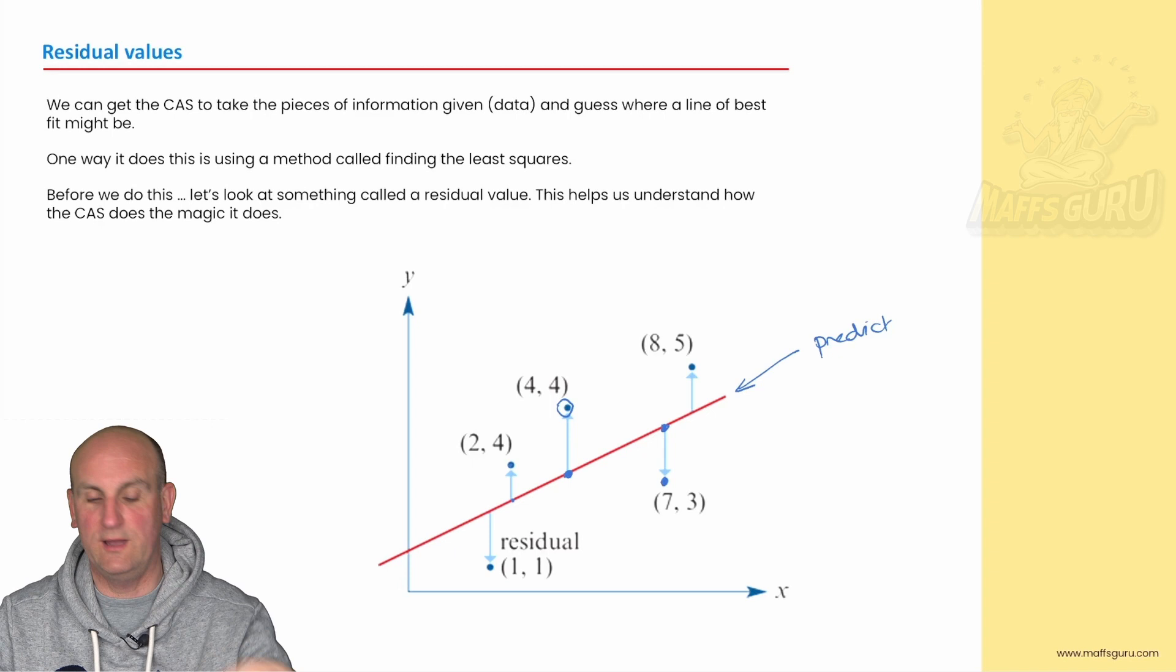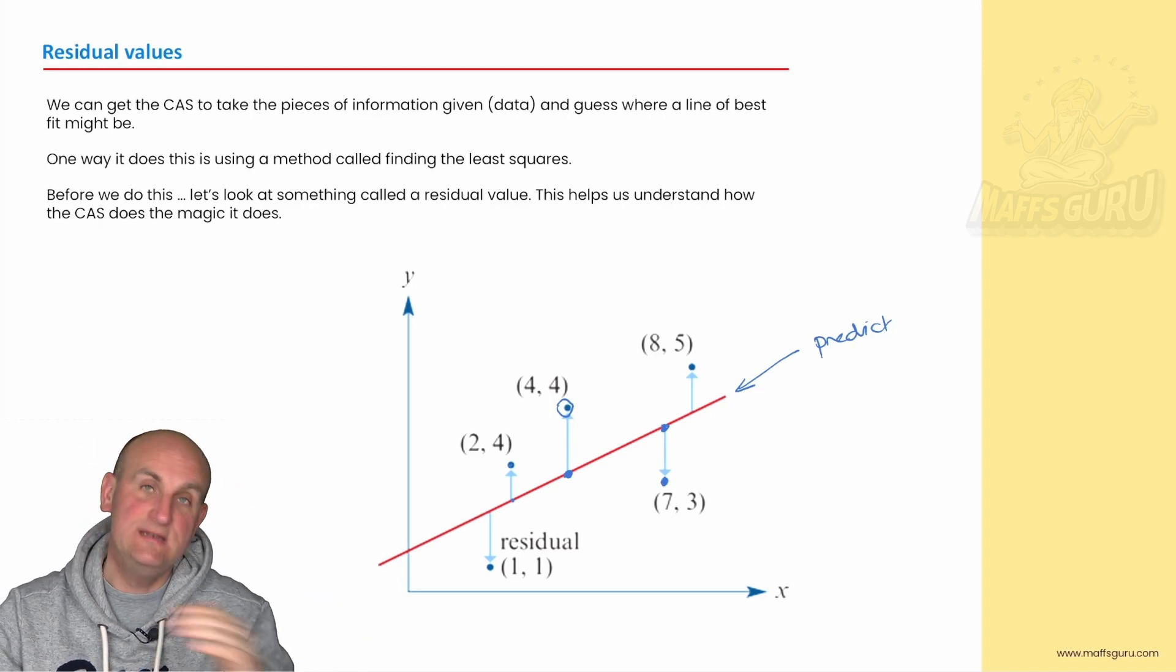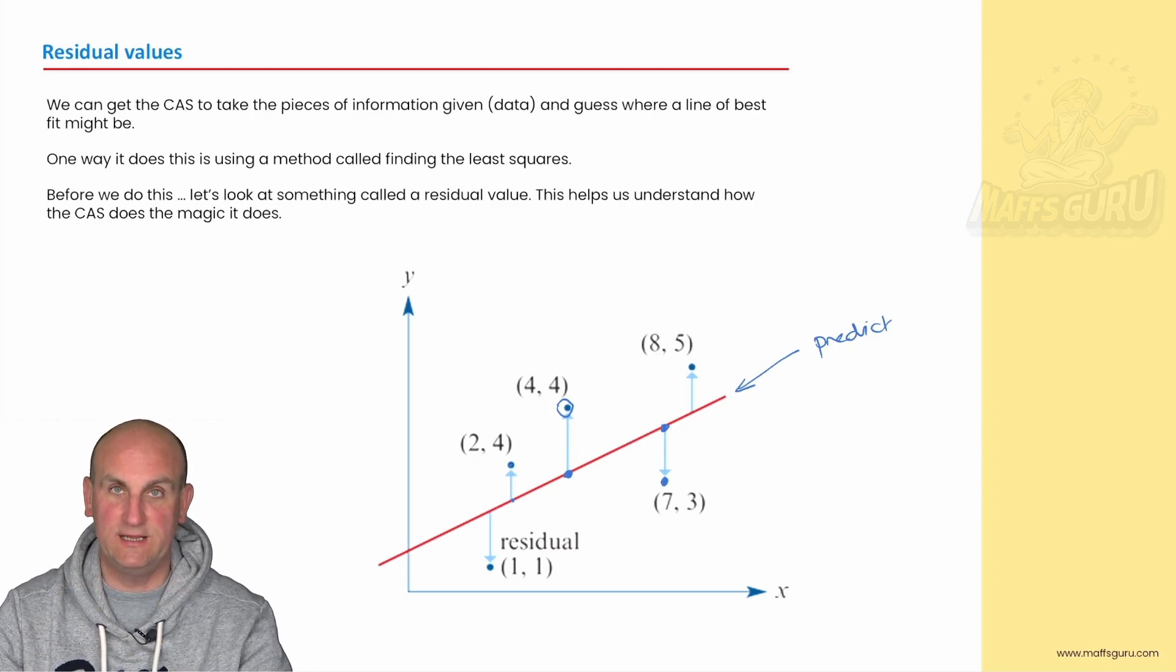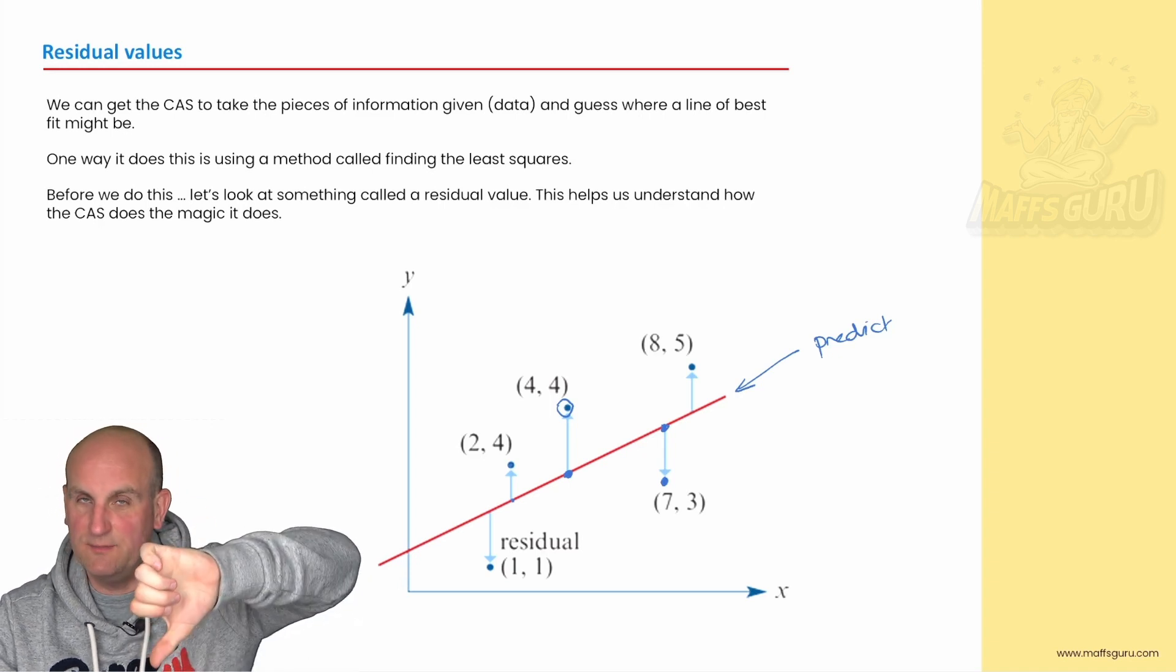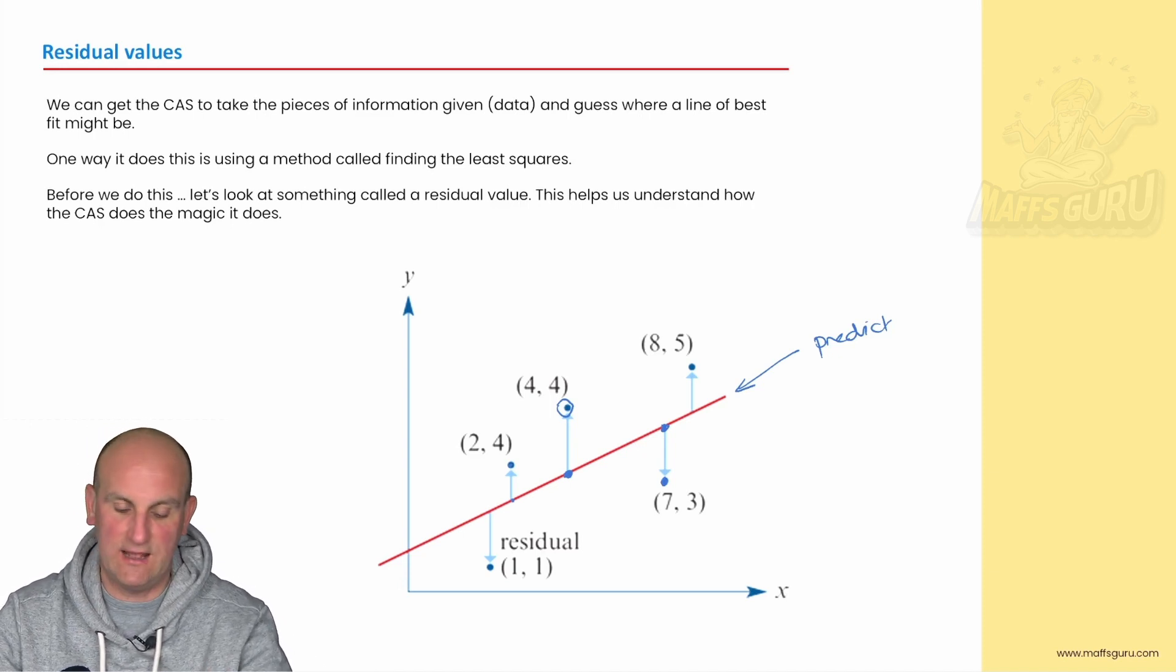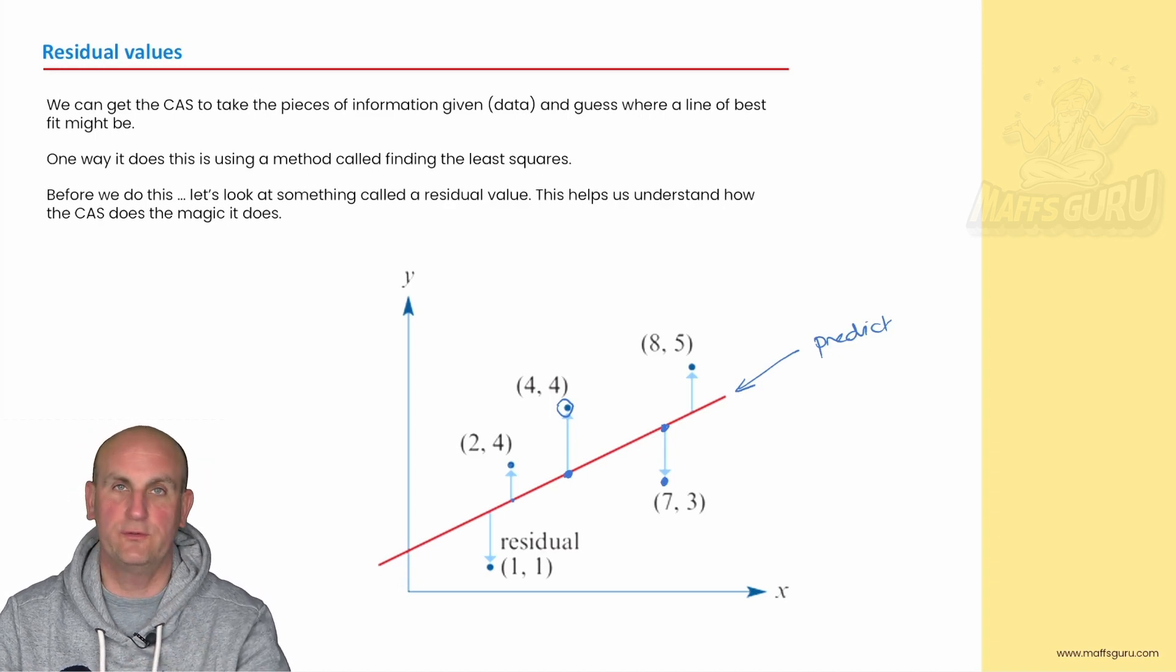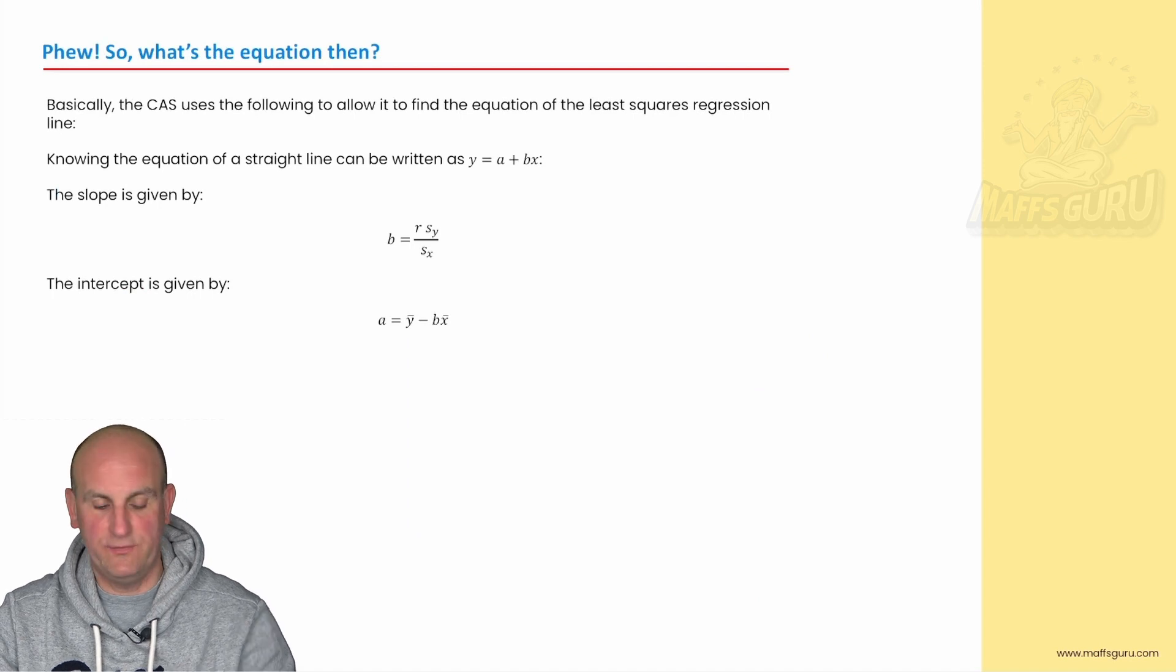Now we can have positive residuals, that's where the actual value is higher than the prediction, and we can have negative residuals, which is when the actual data point is much lower than the prediction. So some of the data points are going to be too high, some of them are going to be too low, and we're trying to average that out so that effectively it zeros out. How does it do that? Well, that's way beyond the scope of this video, but just realize that your calculator does a lot of hard work behind the scenes to get that line.